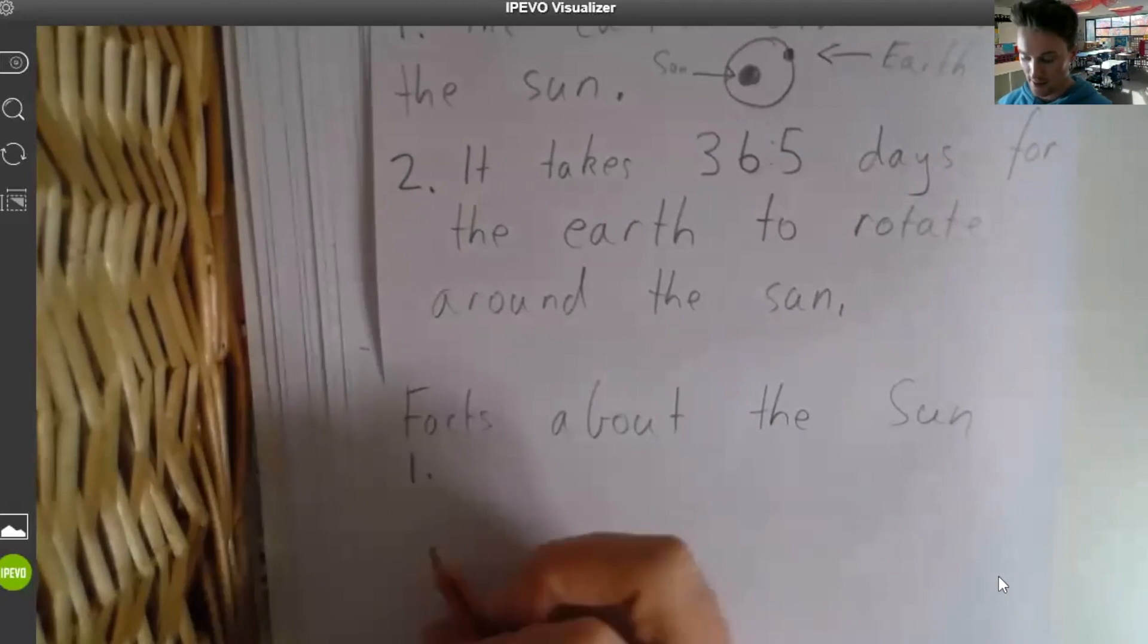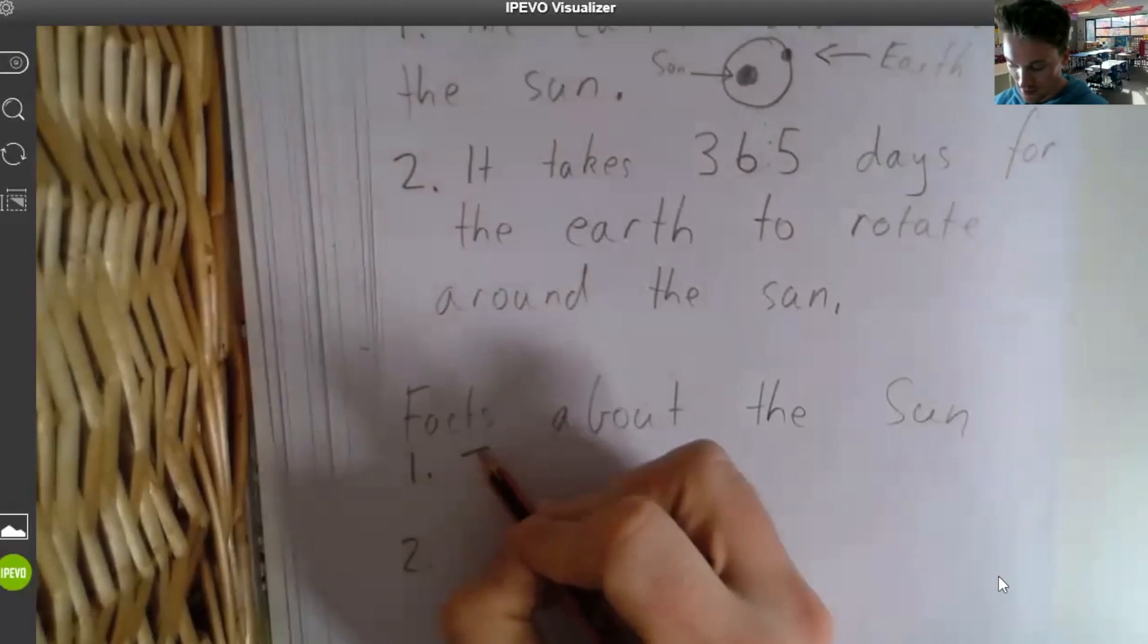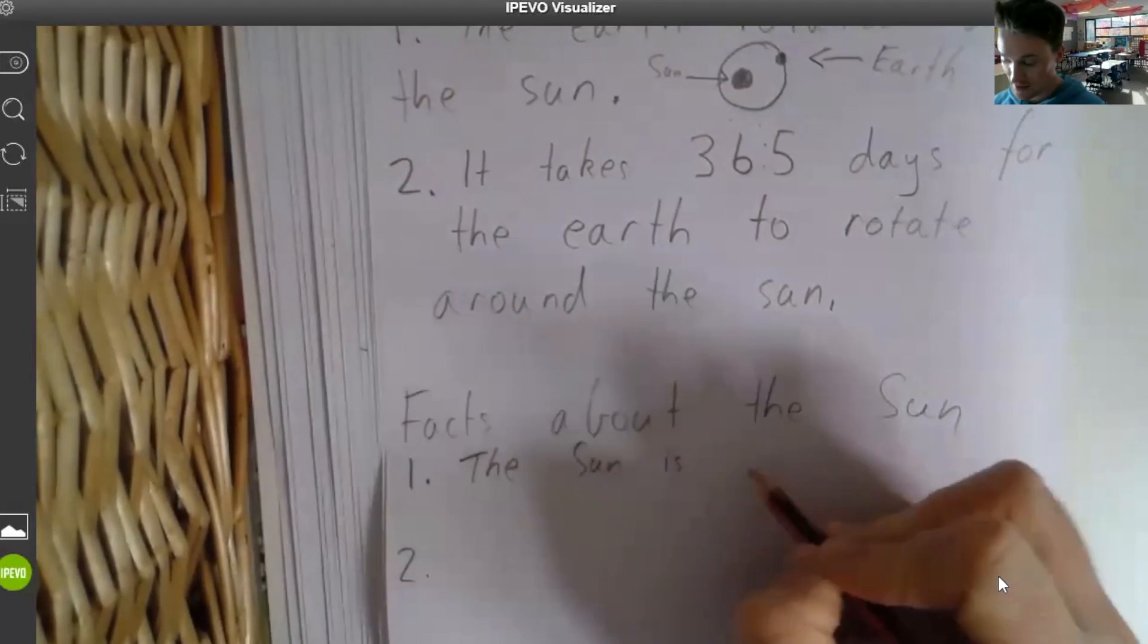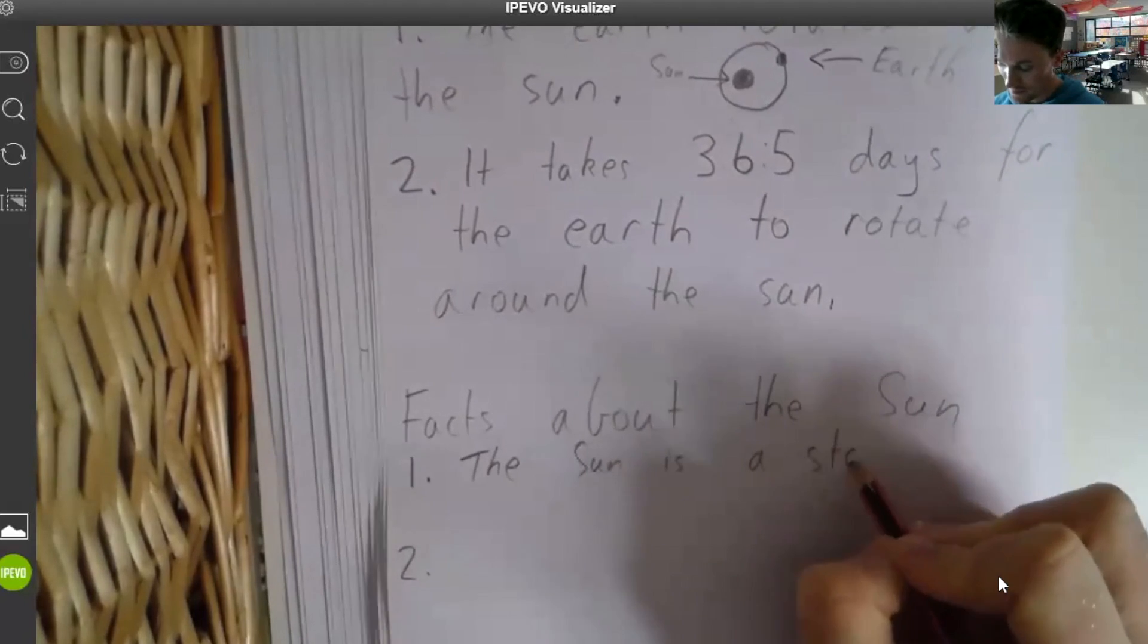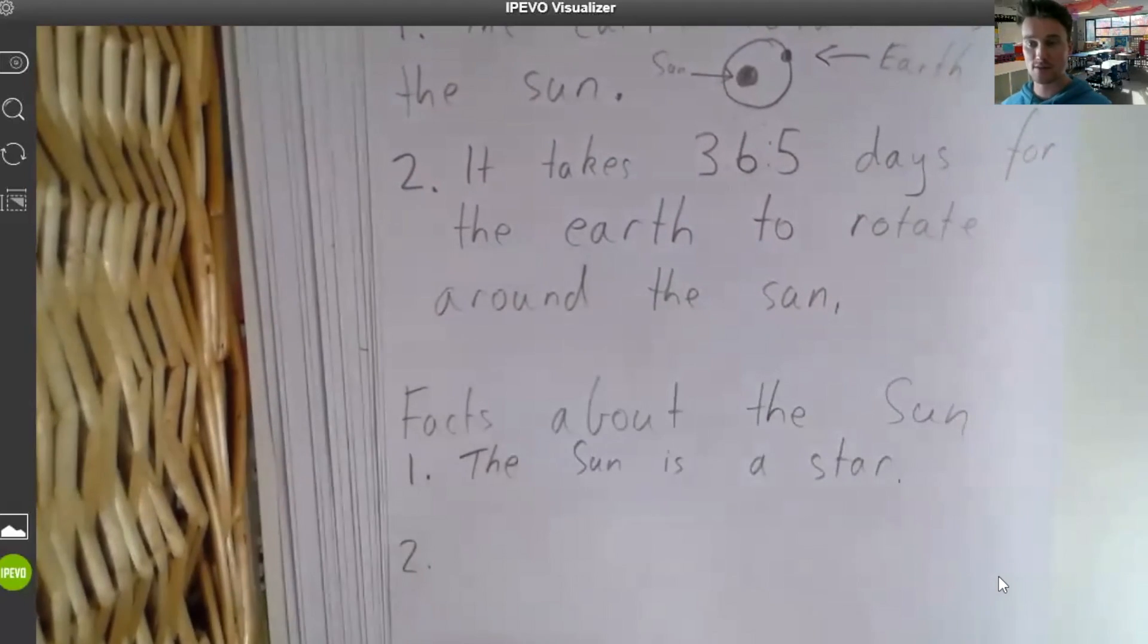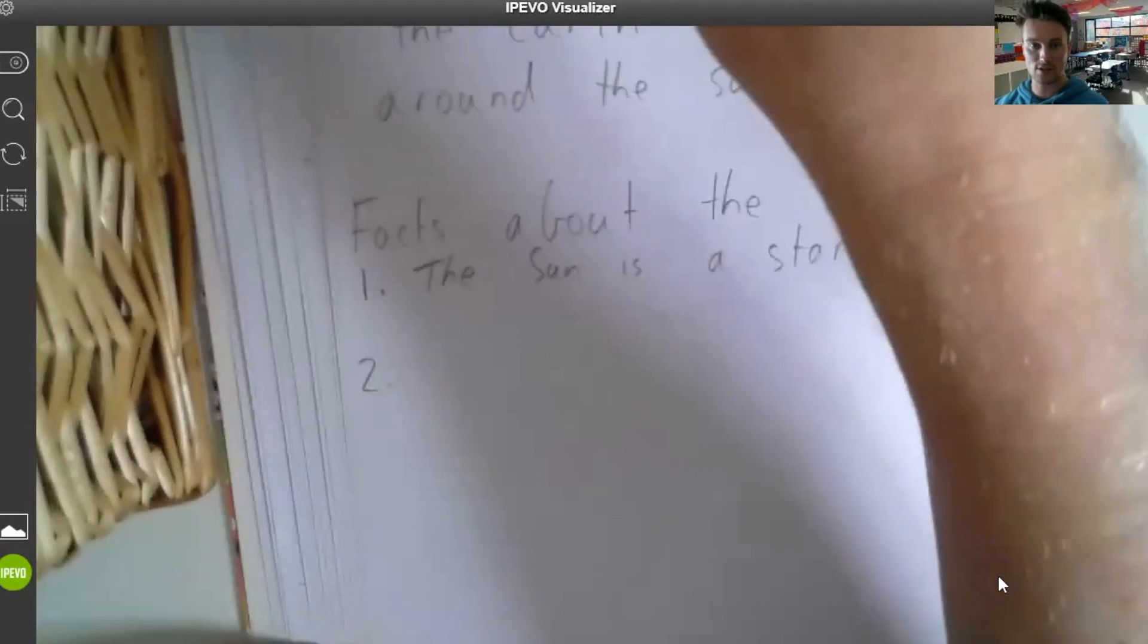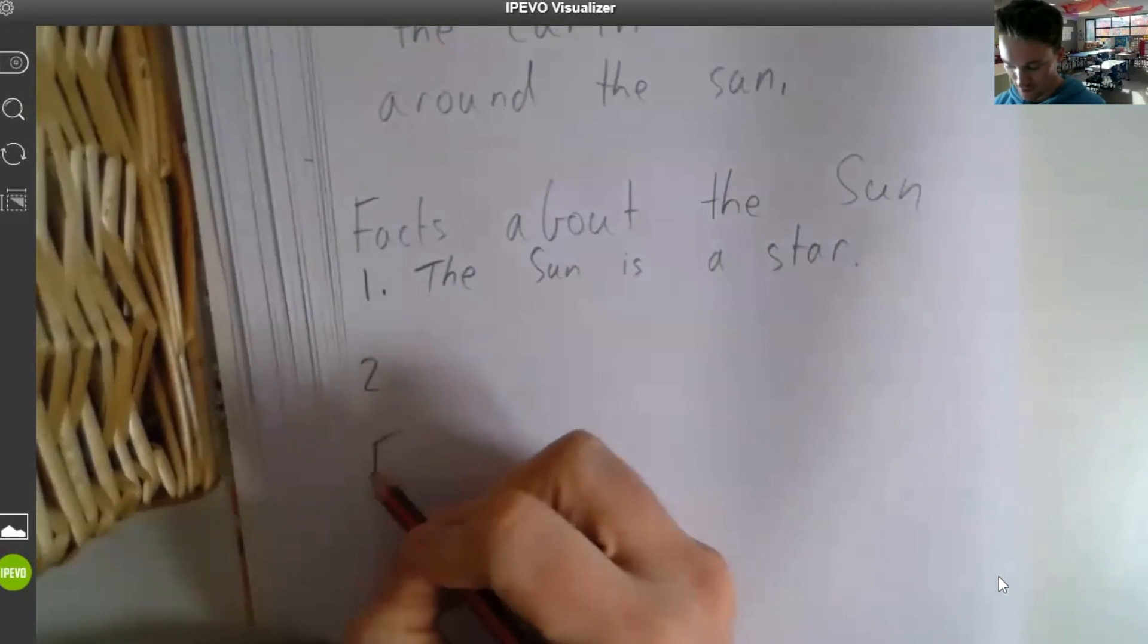So have a look at my book. Facts about the sun. Number one, the sun is a star. If you were just writing that, that's a terrific answer. And that's absolutely fine. Then you'd keep watching the video and you would write down number two, and then you would write another heading and you would write down facts about the moon. So let me quickly do that for you. Facts.